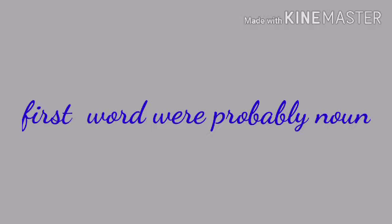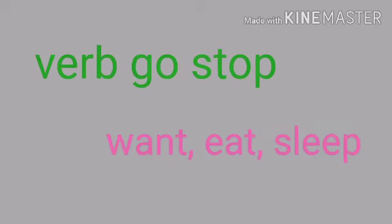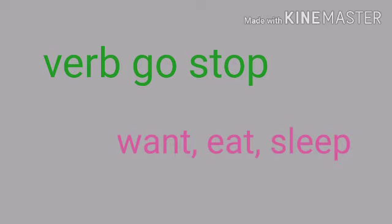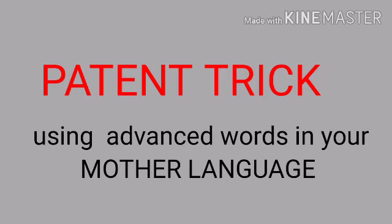Soon came the ability to express intangible ideas, and then you began to use simple verbs: go, stop, stay, want, eat, sleep. As you gain maturity, your words expressed ideas of greater complexity. As an adult, you can describe the most involved concept in a few simple syllables. Today we will see some more useful words using the same pattern trick — connecting advanced English words with your mother language, Hindi. So let's begin.